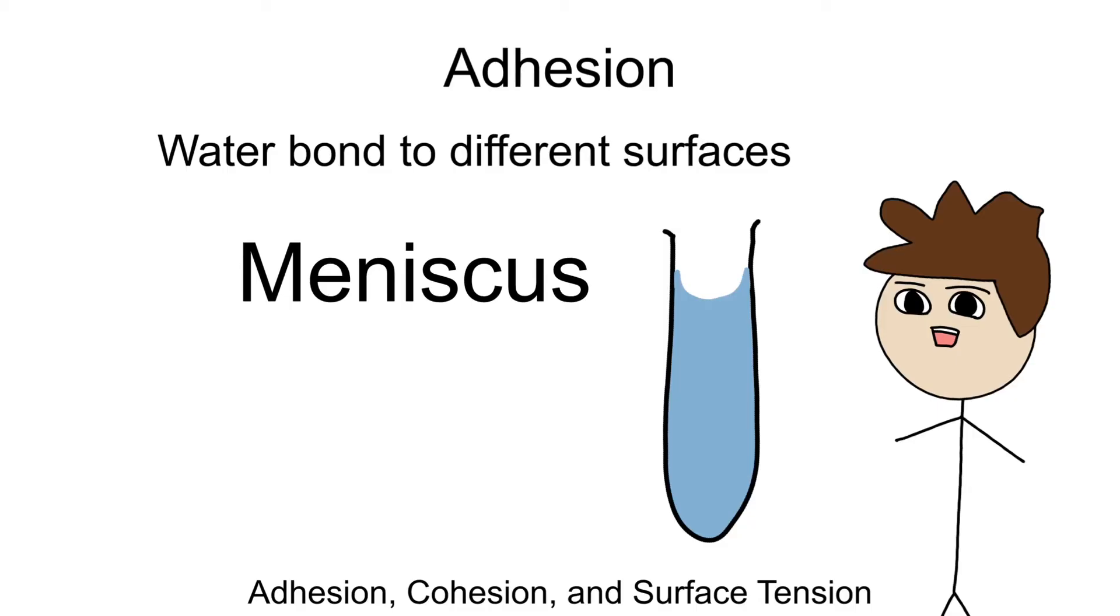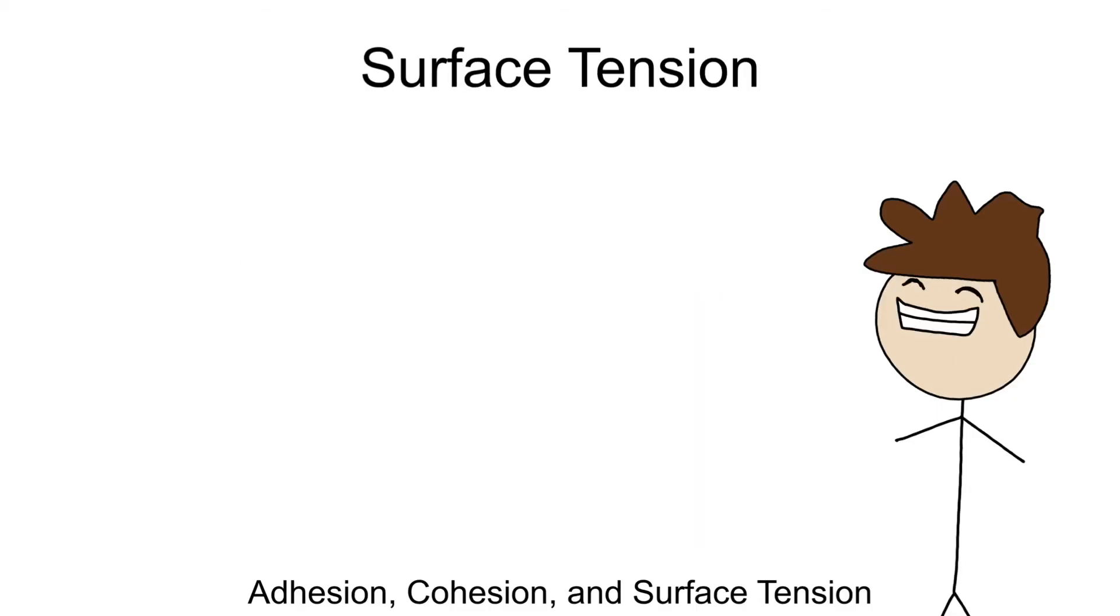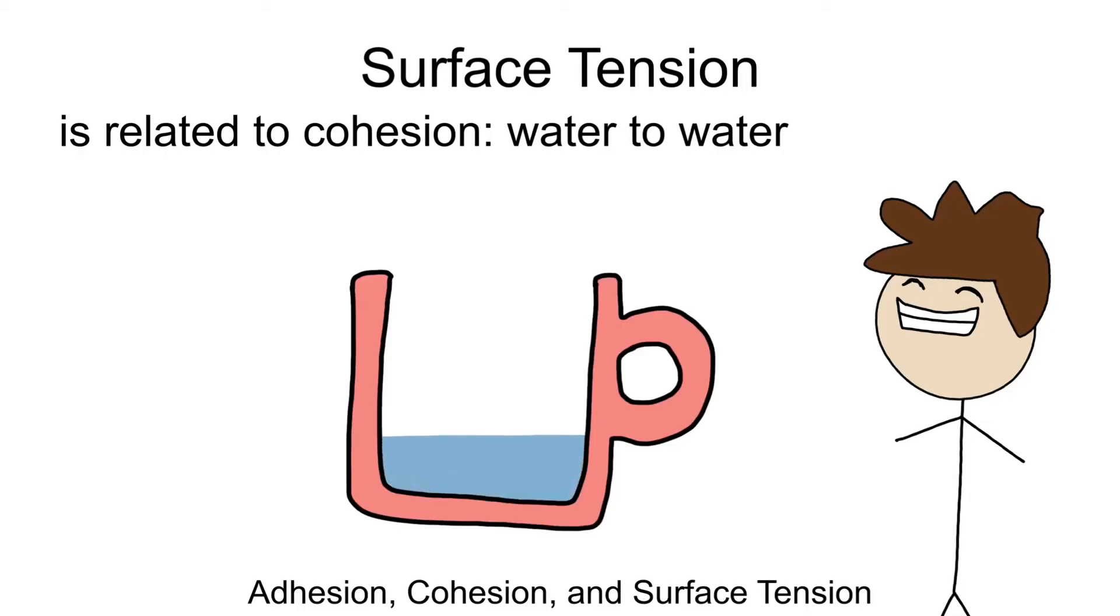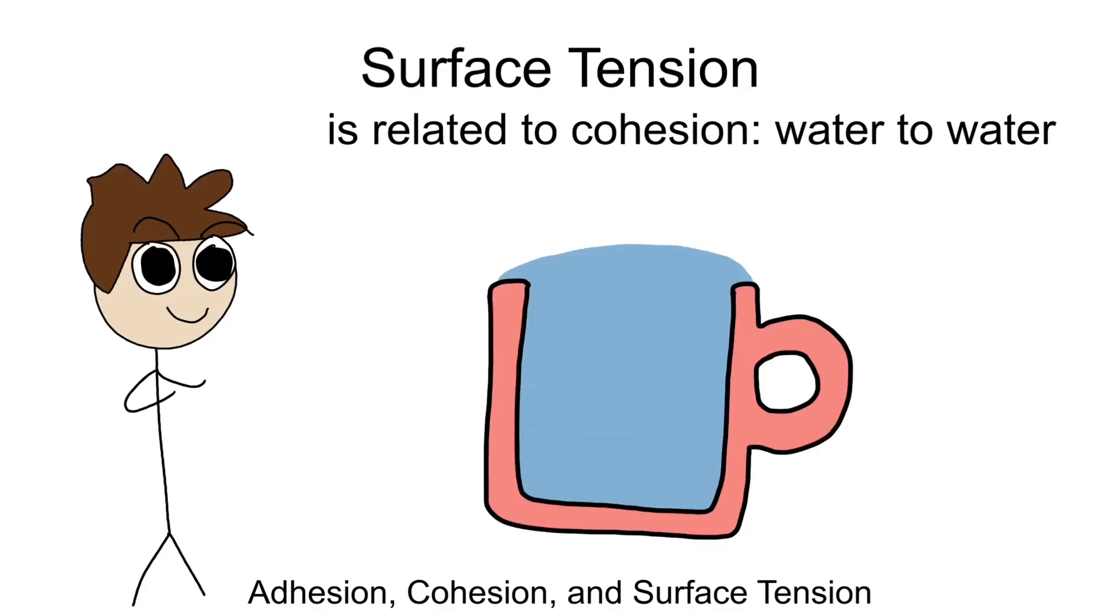And then there's something called surface tension. Surface tension doesn't pertain to adhesion, but it is heavily related to cohesion—water on water. Have you ever tried to fill up a cup with water as much as possible but not spill it over? When water reaches the very edge of the cup, you can still add a little bit of water and it develops this dome-like shape, sort of like a muffin top.